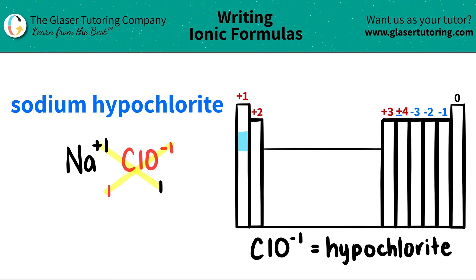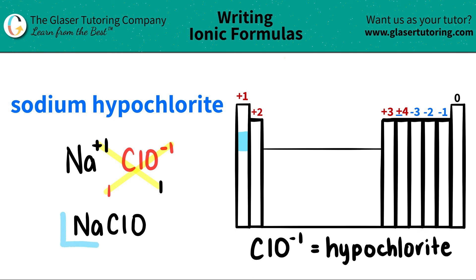So now we're ready to just write it out. It would just be Na — you don't have to write one because if you have only one of something, it's standard that you don't have to write the one. And then you have just ClO. That's the answer. So sodium hypochlorite is just NaClO.